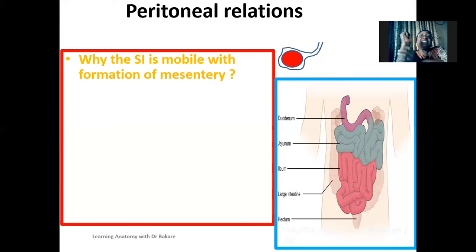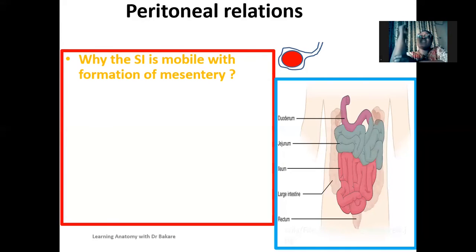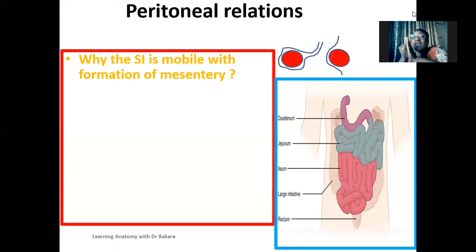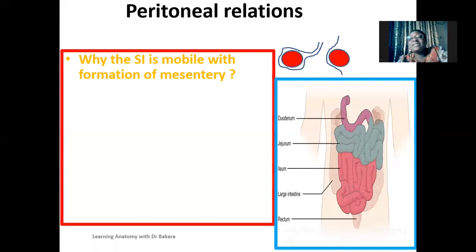The length of the mesentery determines the degree of movement — the longer the mesentery, the greater the range of movement. For retroperitoneal organs, the peritoneum runs on just one surface of the organ, holding it in place against the wall of the cavity. That is why retroperitoneal organs are immobile. Unlike intraperitoneal organs, where the peritoneum lines the entire surface, retroperitoneal organs are held fixed. This is the basis on which intra- and retroperitoneal organs are distinguished.